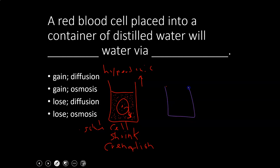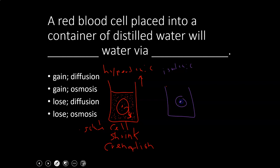Isotonic means the same concentration inside and outside the cell. Since concentrations are equal, there is no net movement of water — water goes in just as fast as it goes out. The cell does not change size; it's already at equilibrium, or using a term from chapter one, at homeostasis.